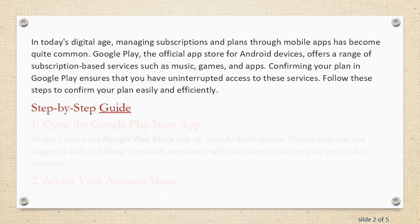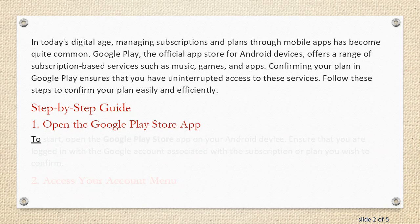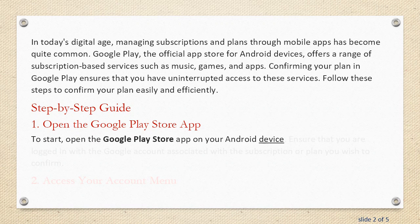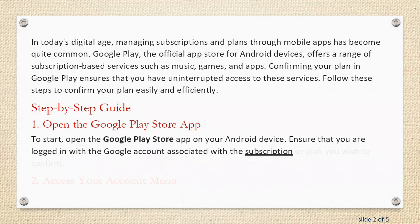Step-by-Step Guide. Step 1: Open the Google Play Store app. To start, open the Google Play Store app on your Android device. Ensure that you are logged in with the Google account associated with the subscription or plan you wish to confirm.